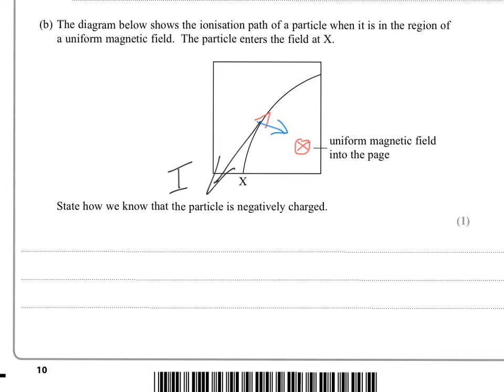So Fleming's left hand rule gives us that the particle must be negative, because we've got a current pointing against the motion of the particle, and that only happens if the particle is negative. So you need to explain that you would use Fleming's left hand rule, and you get a current direction pointing against the motion of the particle. That tells us it's a negative particle.